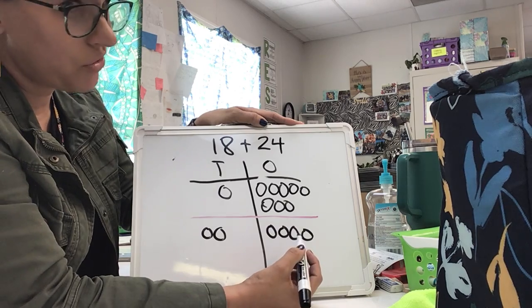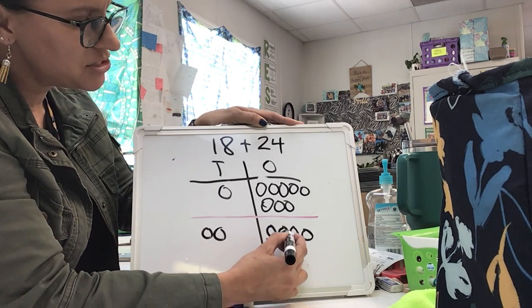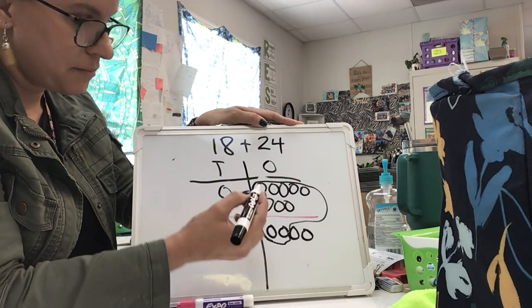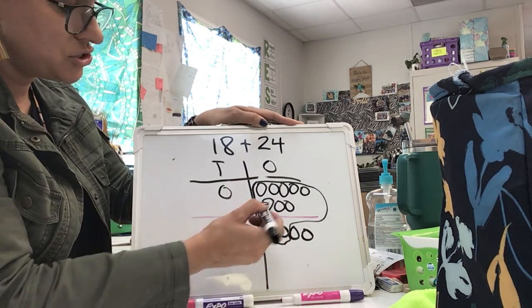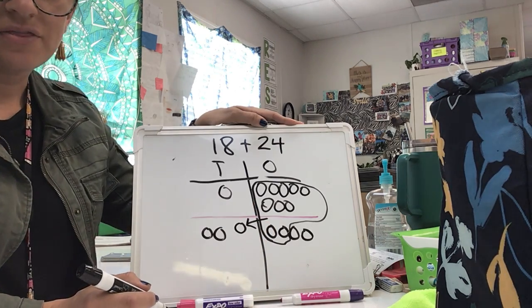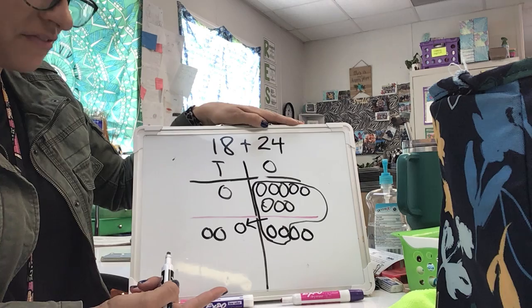The number 12 is more than the number 10. And so what I'm going to do is I'm going to put a circle around 10 of those, and I'm going to regroup them. I'm going to bundle them up, and I'm going to trade them in for a 10. There's my arrow. There's my 10 that I just traded all of that in for.